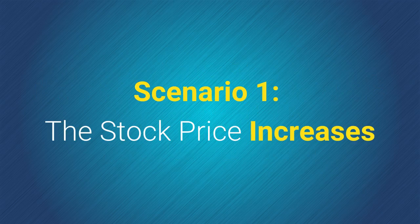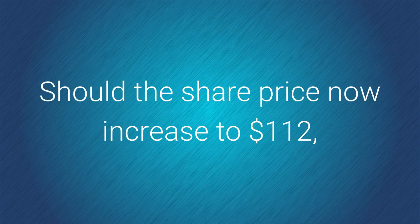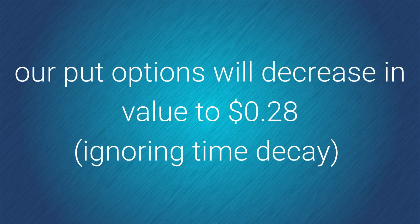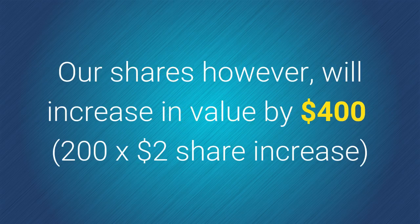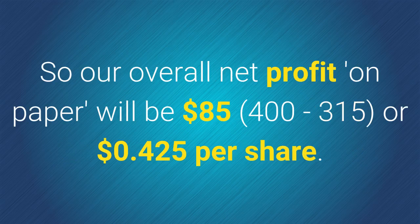Scenario number 1: the stock price increases. Should the share price now increase to $112, our put options will decrease in value to $0.28, ignoring time decay, and our loss will be $0.63 per contract, or $315 in total — that is, $0.63 times 100 times 5. Our shares however will increase in value by $400, that is 200 times the $2 share increase. So our overall net profit on paper will be $85 — the $400 share increase minus the $315 options loss — or $0.42 per share.